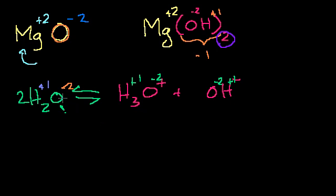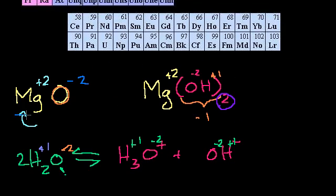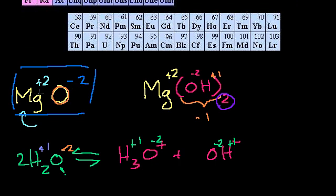I want to be clear that nothing here was oxidized or reduced because their oxidation states stayed the same. Sometimes I'll say magnesium has an oxidation state of +2 and oxygen has -2, implying magnesium was oxidized and oxygen was reduced in some reaction that produced it — but that's not always the case. The oxidation state for magnesium is +2 and for oxygen is -2, but they may have been that way since before the reaction.